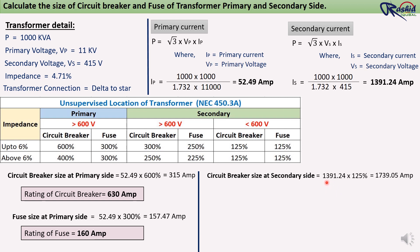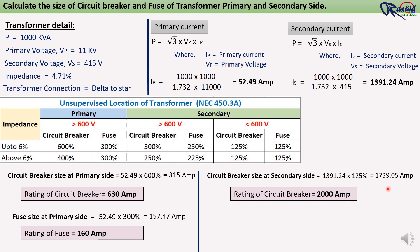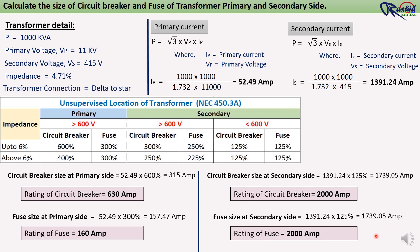After multiplying by the 125% safety factor, we get 1739.05 ampere. Since a 1739 ampere circuit breaker is not available in the market, we use the next bigger available size, which is 2000 ampere. So we will use a 2000 ampere circuit breaker. For the fuse, multiplying 125% by the secondary current also gives 1739 ampere, so we use a 2000 ampere fuse as well.